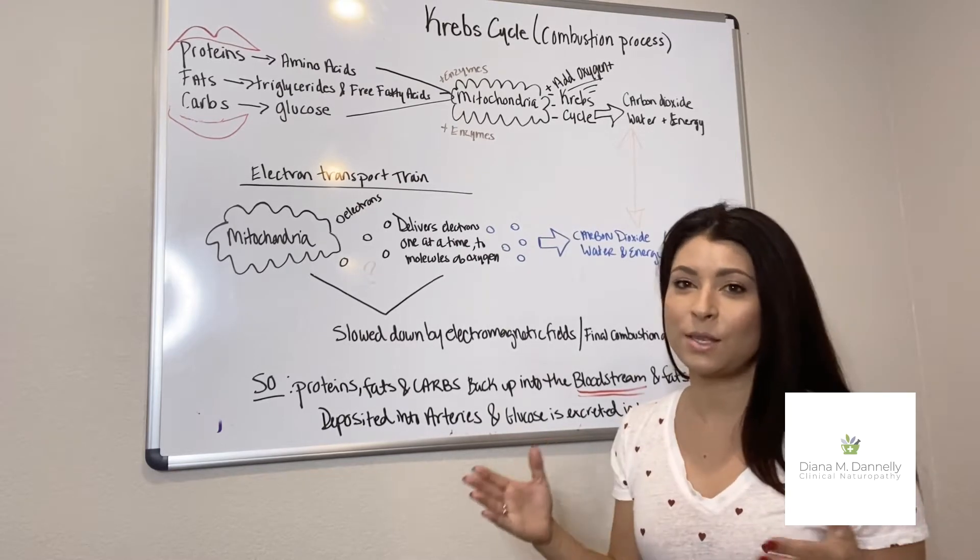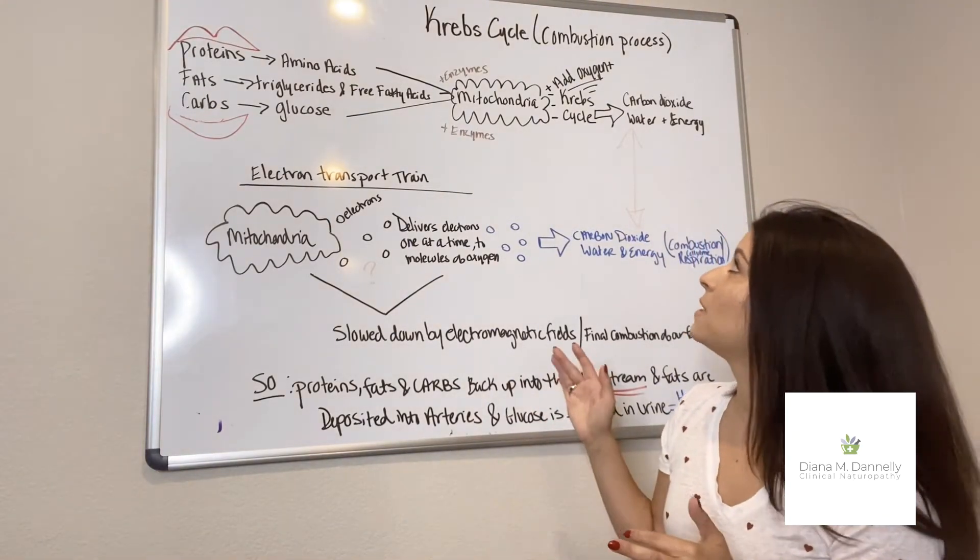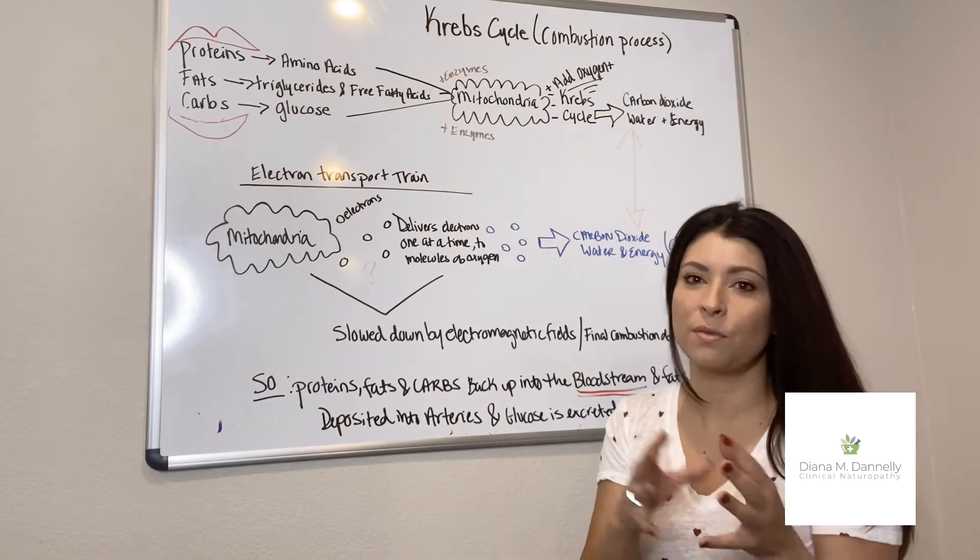This not only affects humans but animals and also plant life, but what I want to specifically talk to you today is about the Krebs cycle, which is basically our body's combustion process. It's how we turn food into energy.